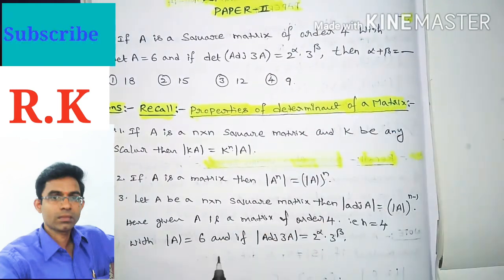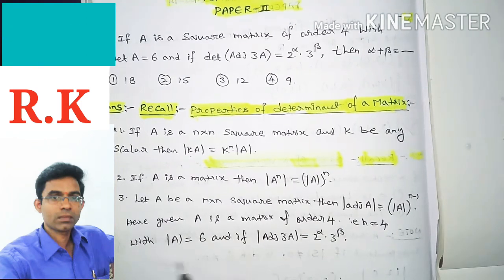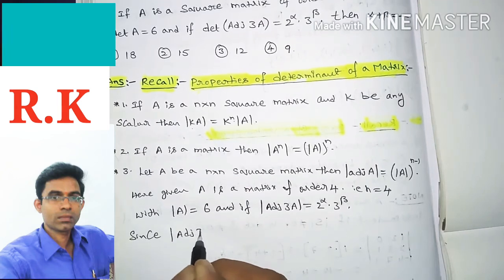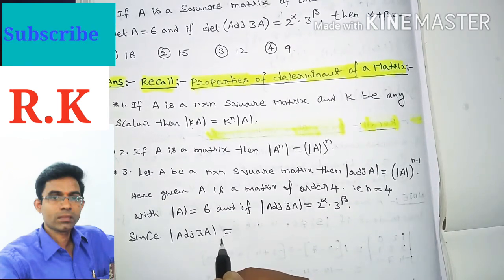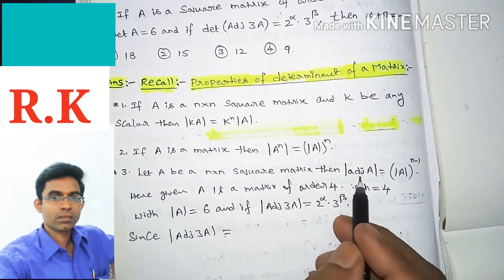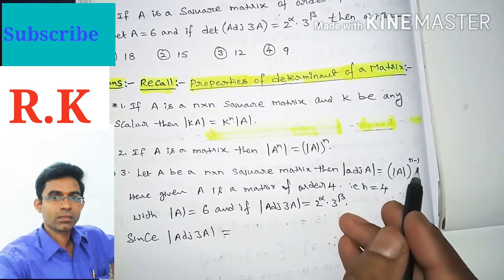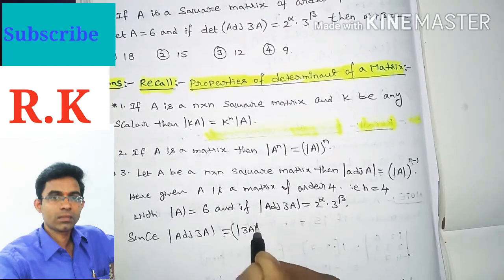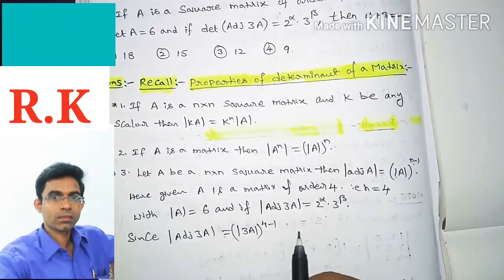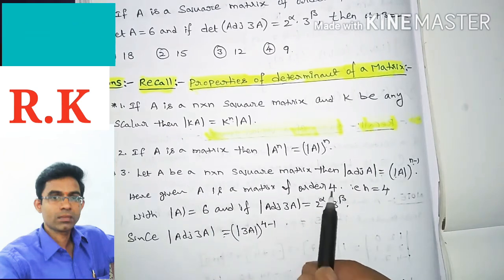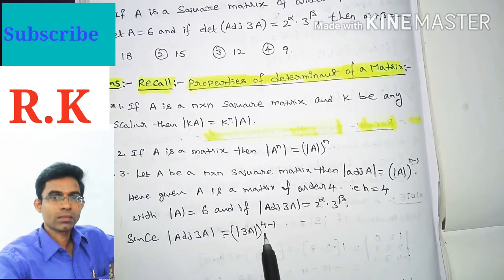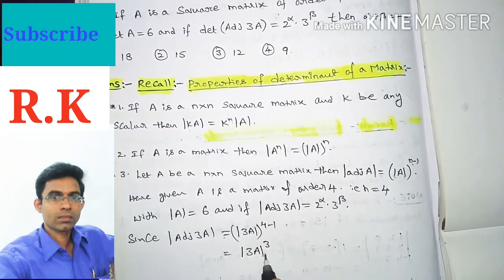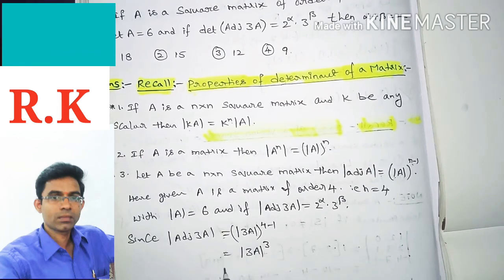We know that det(adj(3A)). Using the property det(adj(A)) equals det(A)^(n−1), we can write this as det(3A) whole to the power 4 minus 1, because the order of the given matrix is 4. So det(adj(3A)) equals det(3A) whole to the power 3, that is whole cube.